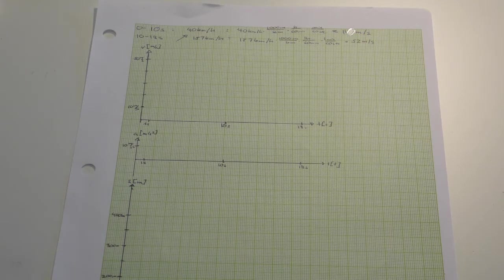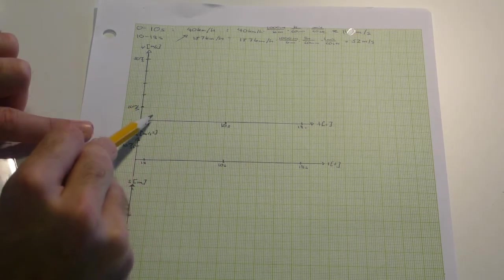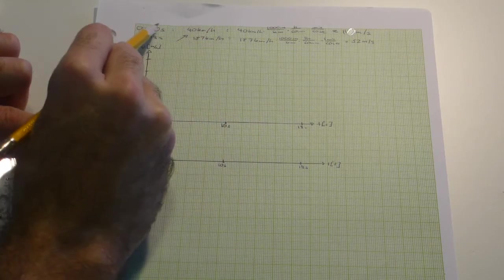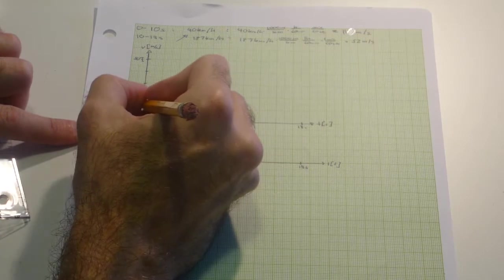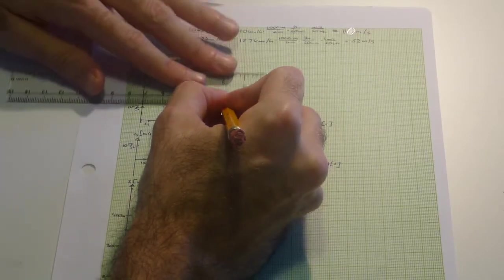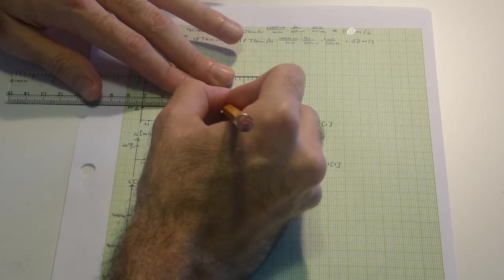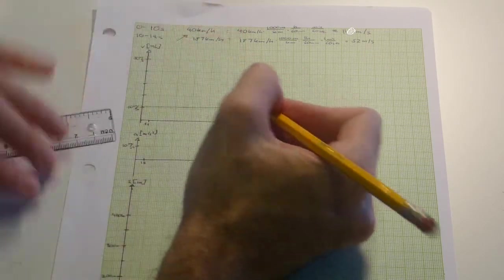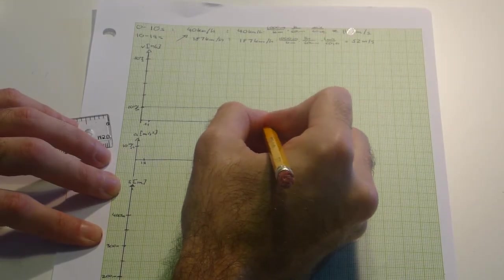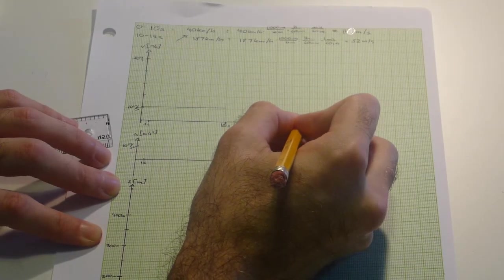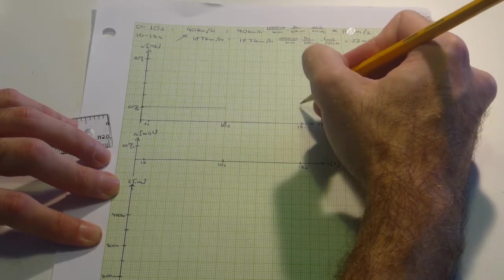So in the VT graph I'm just going to draw that for the first 10 seconds you were at 11 meters per second. Then in the next nine seconds you went up to 52 meters per second.